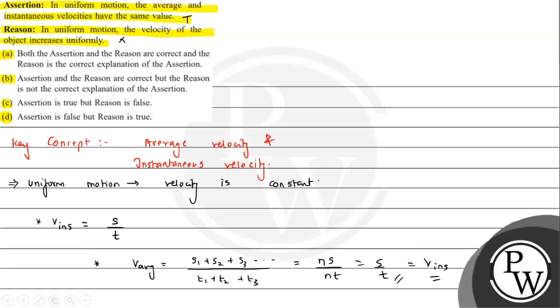For uniform motion, instantaneous velocity and average velocity have the same value. So we can say assertion is true but reason is false. Option C is the correct answer for this. I hope you understood the solution. All the best.